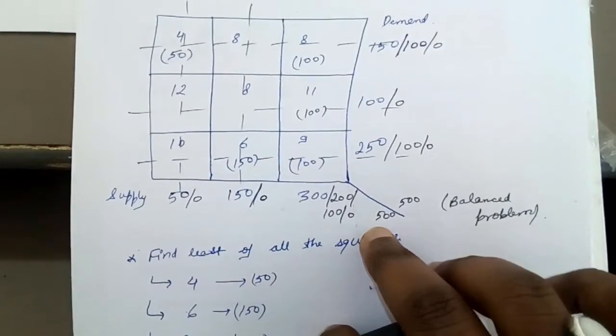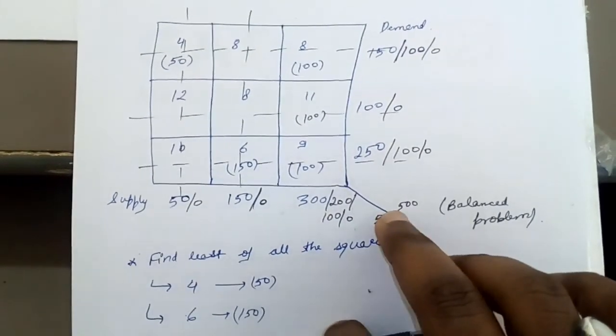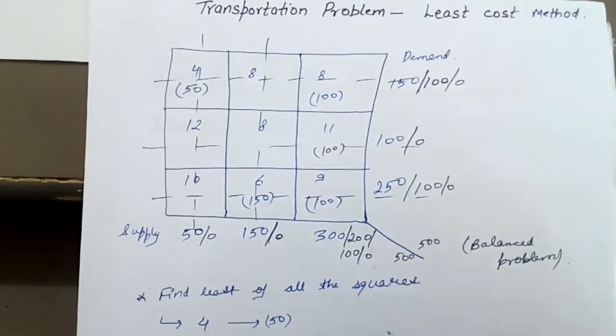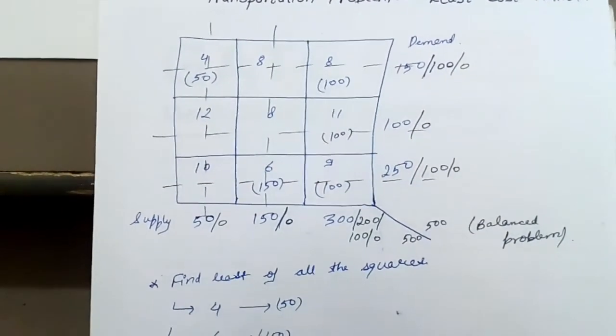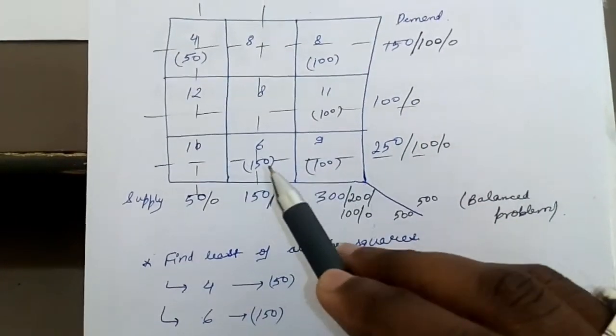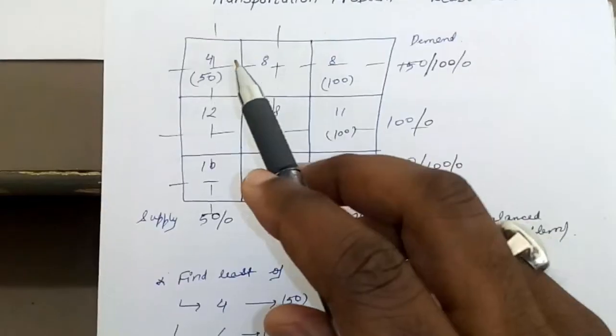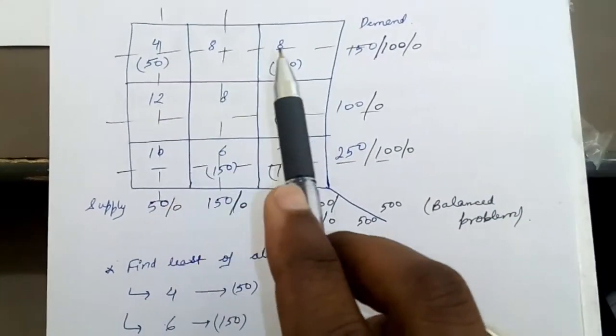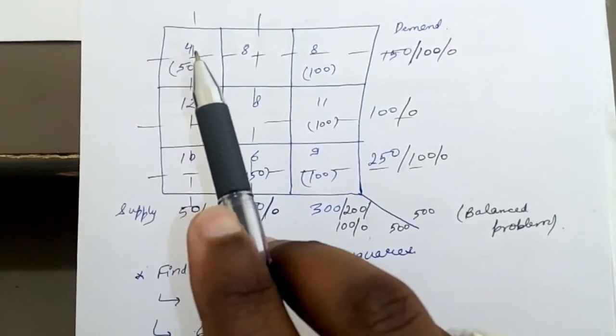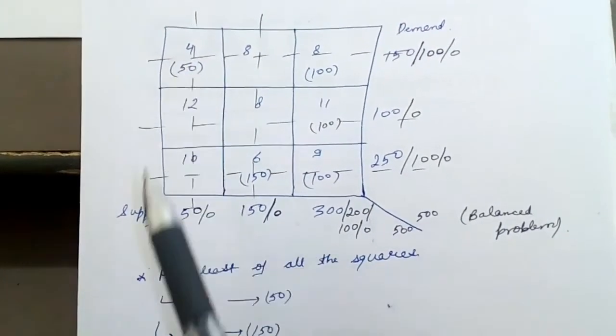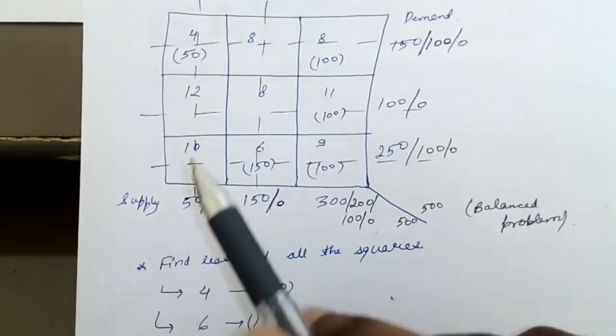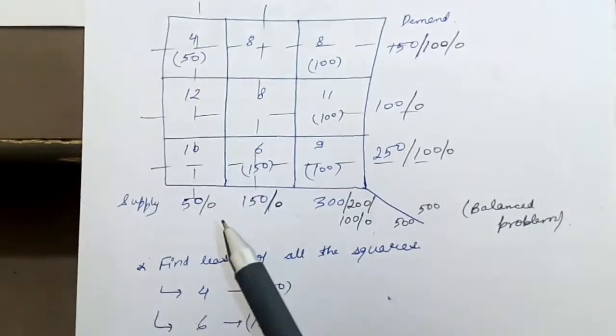Now how to proceed. First you have to find the least of all the squares. Check the value given in the blocks or squares. The least value is 4. So first you have to allocate here. Here supply was 50 but demand was 150, so maximum 50 can be supplied. You write 50 here, you put 0 here, so you cross that column. This is the first step and demand now remains 100.